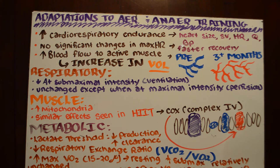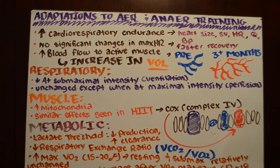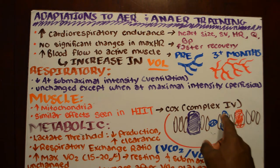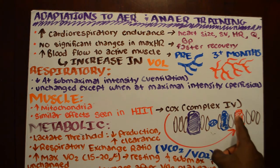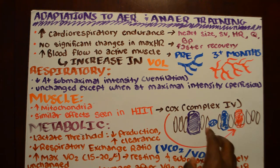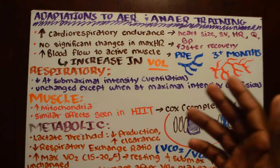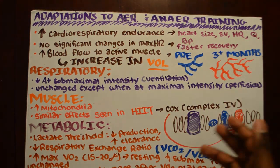In the muscle, we have an increase in mitochondria, which is especially important for aerobic respiration since it relies heavily on mitochondria — that's where oxidative phosphorylation and the electron transport chain occur. Specifically within the mitochondria, we see an increase in an enzyme called cytochrome c reductase, also known as complex 4. This increase allows more efficient shuttling of protons, generating more ATP and more energy so our muscles can perform more activity.